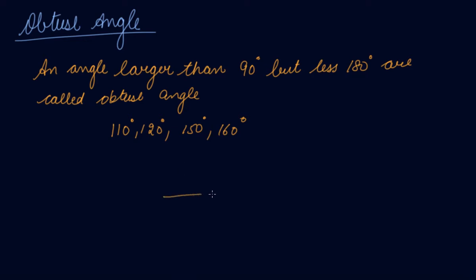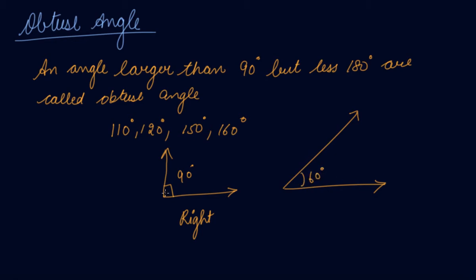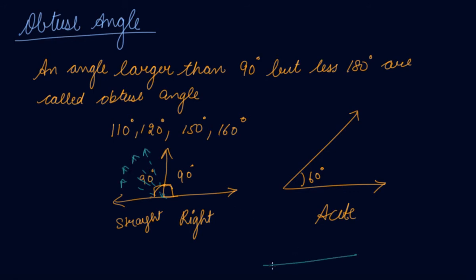We make a right angle like this — this is the right angle. We make an acute angle like this, less than the right angle, let's say 60 degrees. If we add one more 90 degrees, the straight line becomes a straight angle. The angle lying between 90 degrees and 180 degrees — between the right angle and straight angle — in this quadrant are all obtuse angles. So let's say 120 degrees — this is an obtuse angle.